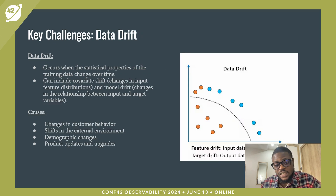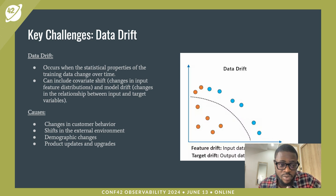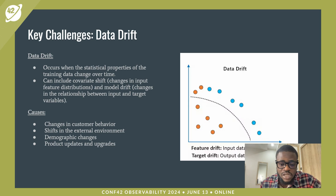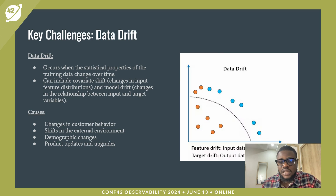What are the key challenges that face model observability? The first is data drift, which occurs when the statistical properties of the training data change over time. It can include covariate shift — changes in inputs and feature distributions — and model drift, which is changes in the relationship between inputs and target variables. Causes of these drifts include changes in customer behavior, shifts in the external environment, demographic changes, and product updates and upgrades.